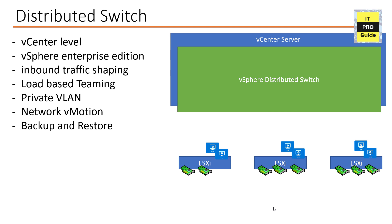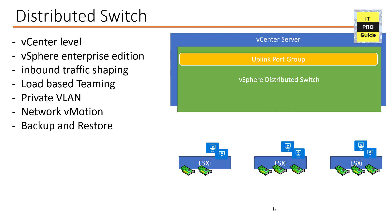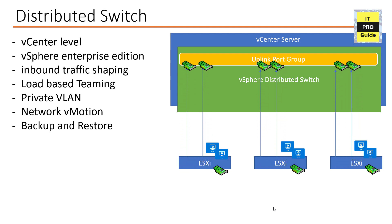The first step is to create a vSphere Distributed Switch. After that, add the ESXi hosts to it. This lets you choose which ESXi hosts need to participate in the distributed switch group — in your environment you may not need all ESXi hosts to be part of it. Once ESXi hosts are added, the next step is to create an uplink port group, then assign physical network interface cards to that uplink port group of the vSphere Distributed Switch.